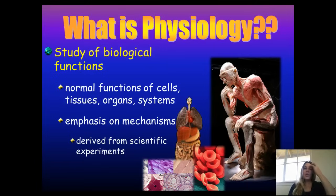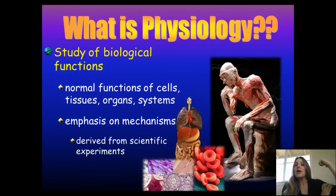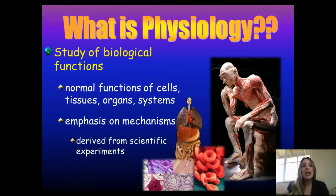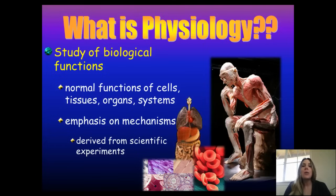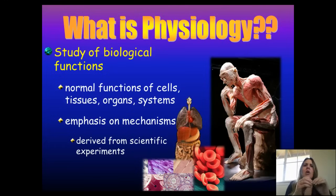Let's take an example of the difference between anatomy and physiology — your bicep. That's a muscle. The anatomy part is studying what it's called, where the insertion is, where the origin is. That's the anatomy part. How that muscle actually functions — what is going on at the cellular level — that's physiology.